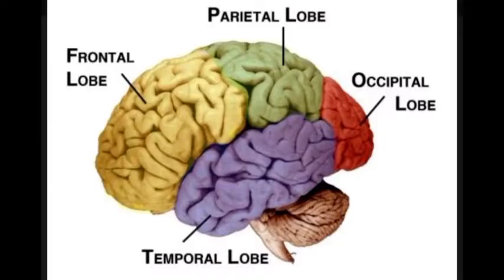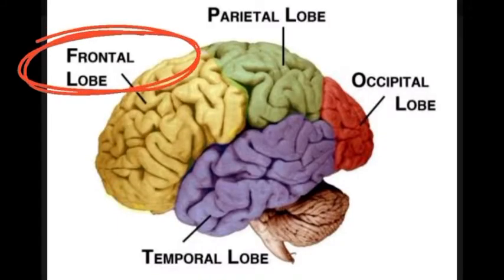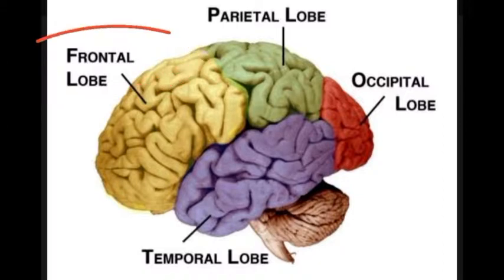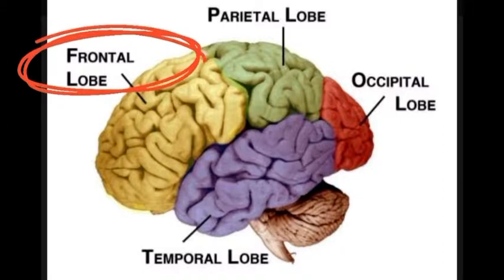Let's start with the frontal lobe. The frontal lobe is responsible for voluntary movement, planning, our intellect, and problem solving.